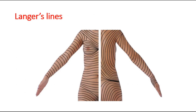Next, let us take a look at the picture showing Langer's lines. They are topological lines drawn on a map of the human body. They are parallel to the natural orientation of collagen fibers in the dermis, as well as the underlying muscle fibers.